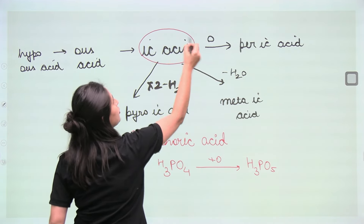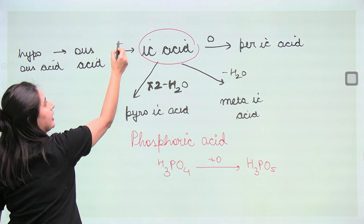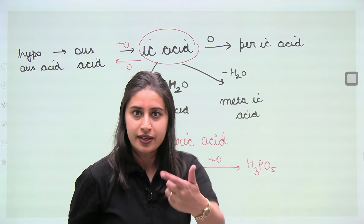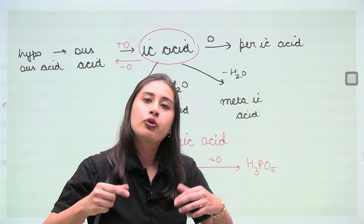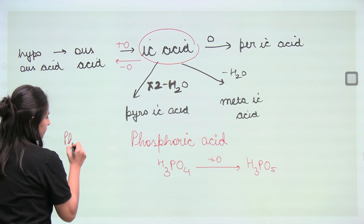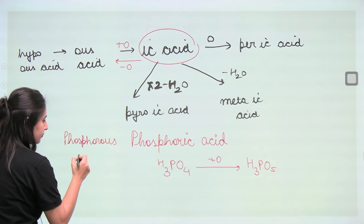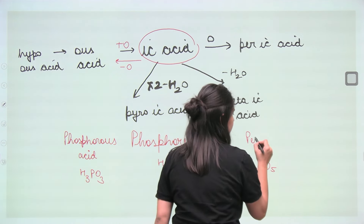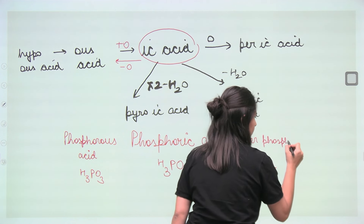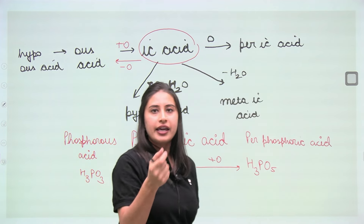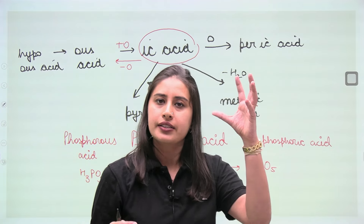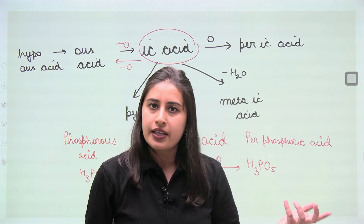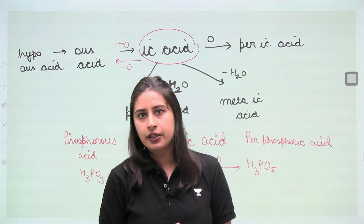Starting from one acid, if you remove one oxygen, you get the '-ous' acid. So from phosphoric acid removing one oxygen gives phosphorous acid H3PO3. You can make this kind of chart for all acids — do the same with sulfuric acid and all the halogen acids.